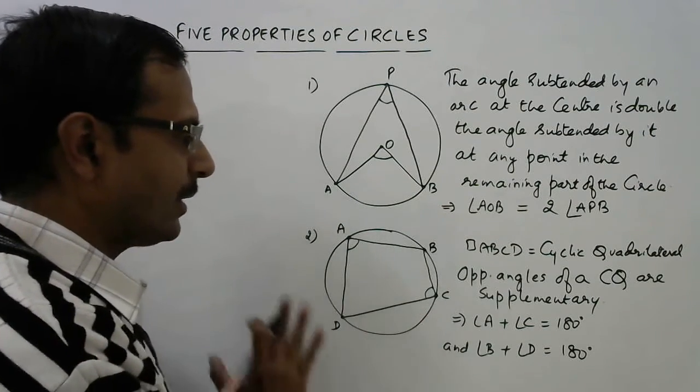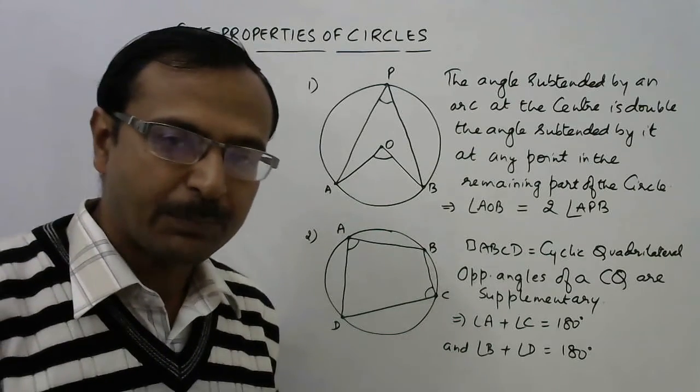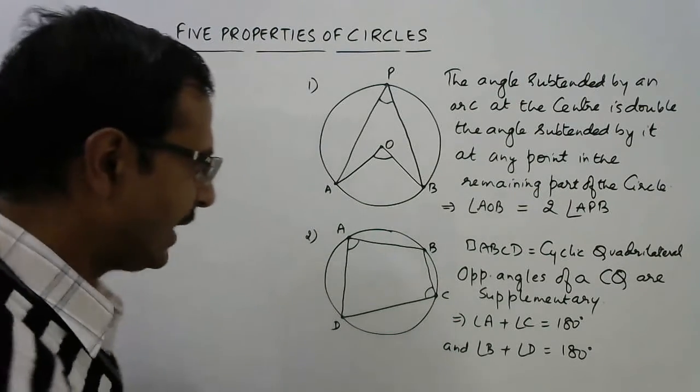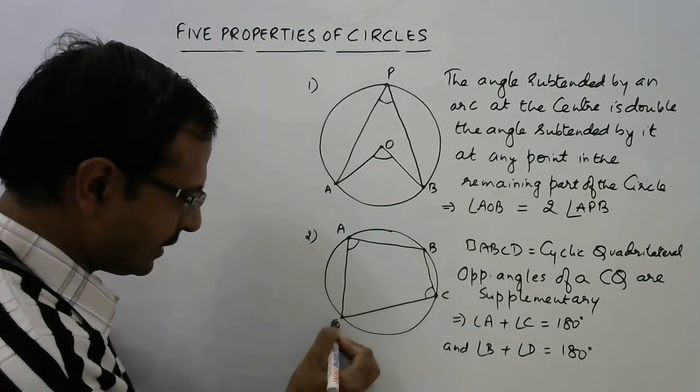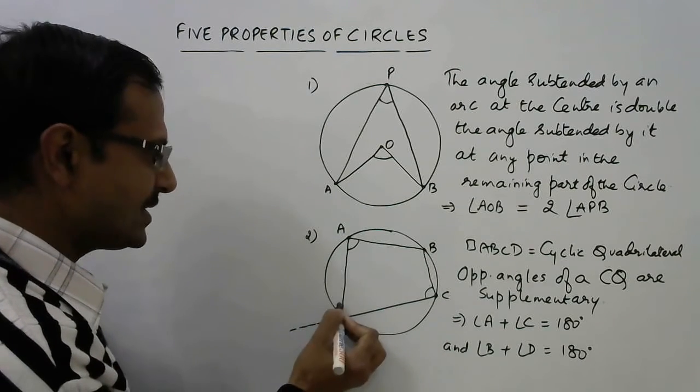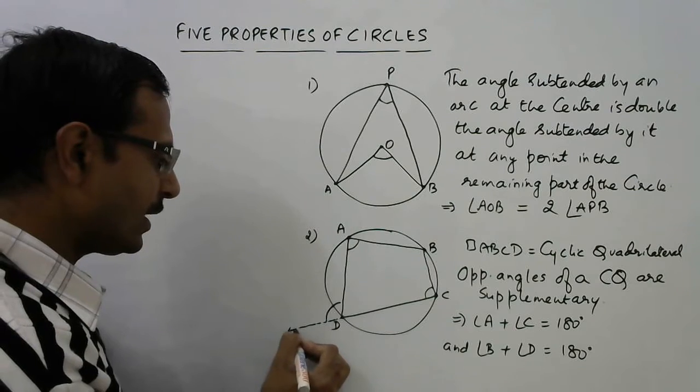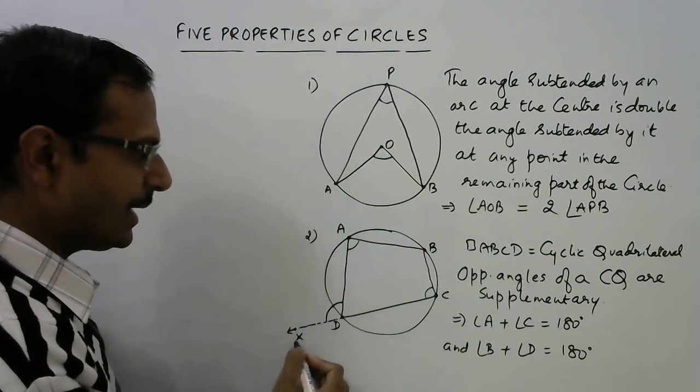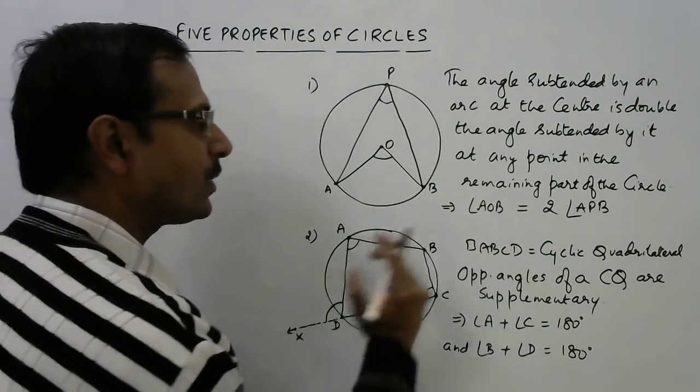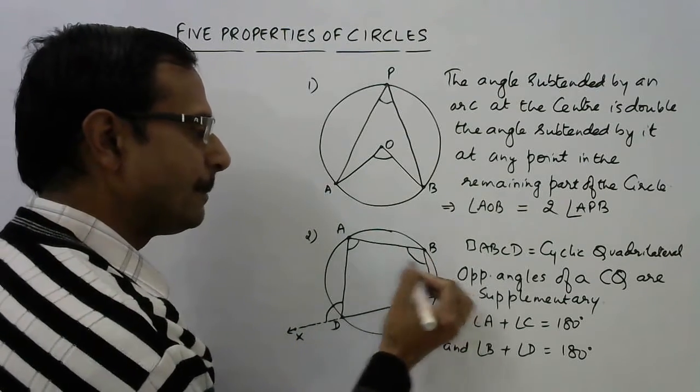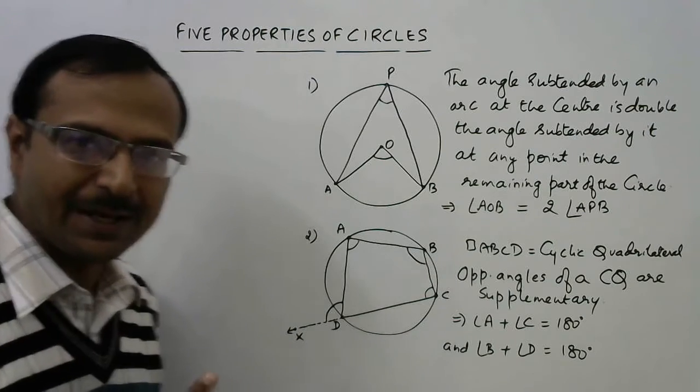Now in the same cyclic quadrilateral, if I produce one of the sides, suppose I am producing this side CD, this is the exterior angle of the cyclic quadrilateral. This exterior angle XDA will always be equal to the interior opposite angle, angle B. This is the third property.